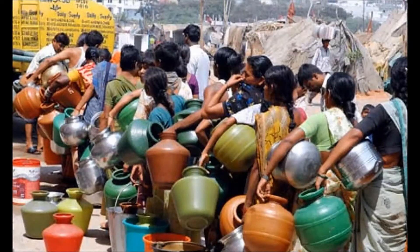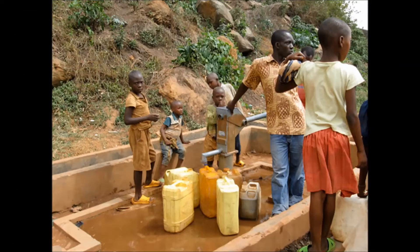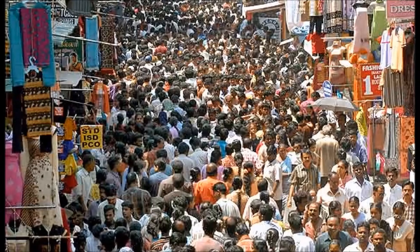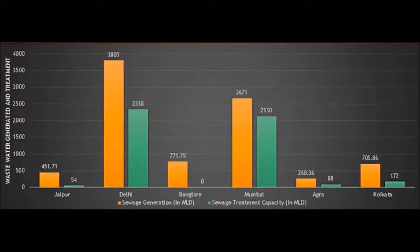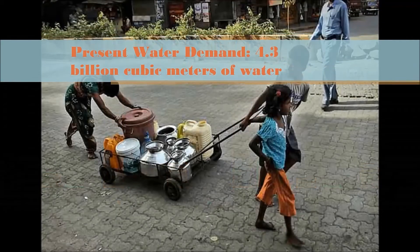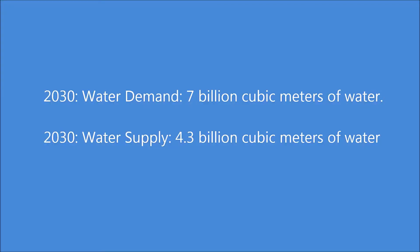At the beginning of the 21st century, the world faces a water crisis both of quantity and quality, caused by continuous population growth and industrialization, food production practices, and increased living standards. According to research on wastewater generated in major cities of India: present water demand is 4.3 billion cubic meters, 2030 water demand is projected at 7 billion cubic meters, while 2030 water supply remains at 4.3 billion cubic meters — a 40% shortfall.